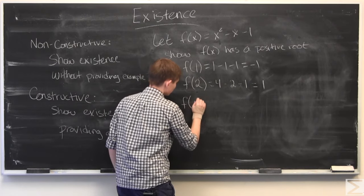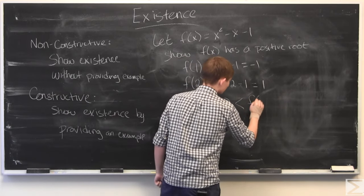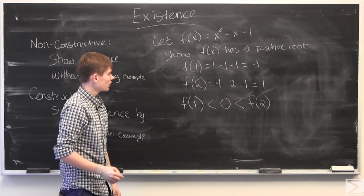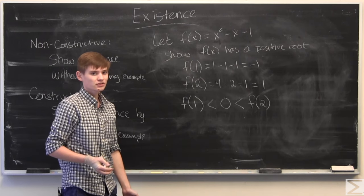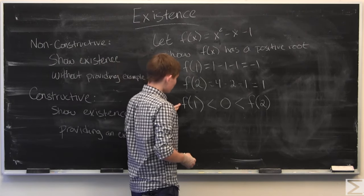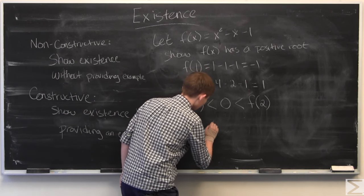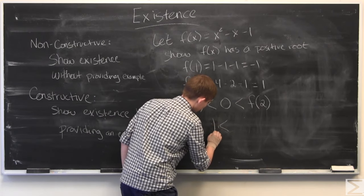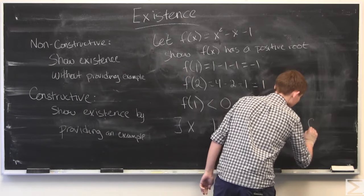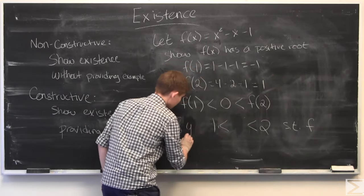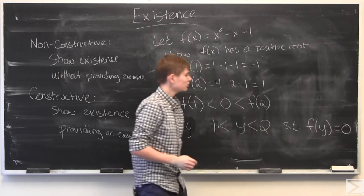We have now shown that f(1) is less than 0, and 0 is less than f(2). By the intermediate value theorem, which we can use because it's a proven mathematical fact, we can say that there exists a y where y is between 1 and 2, such that f(y) is equal to 0.